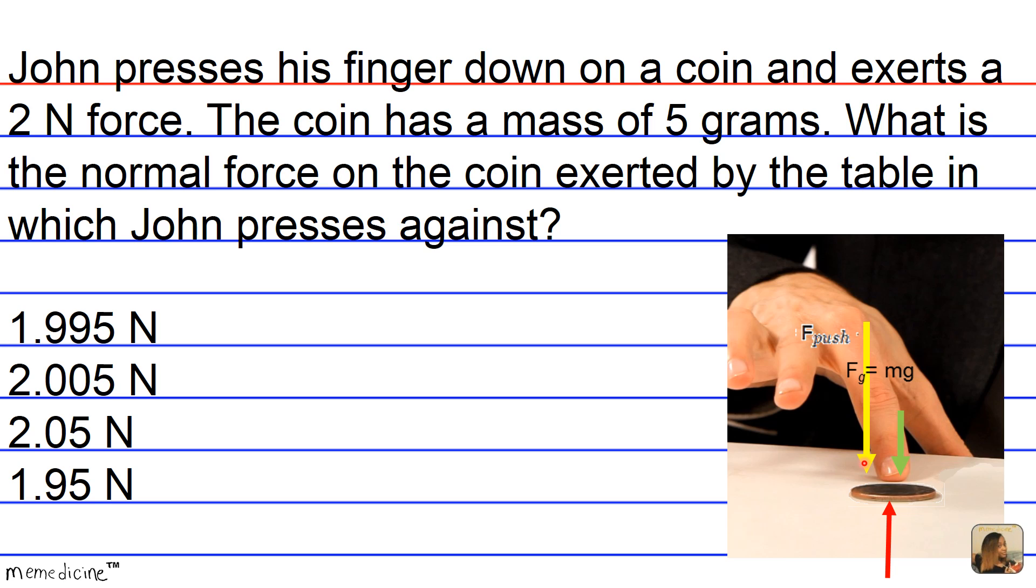The force from John and the gravitational force pushes down on the coin, while the normal force pushes up on the coin. And since the coin is in static equilibrium, the sum of the forces or F net is eventually going to be equivalent to zero.